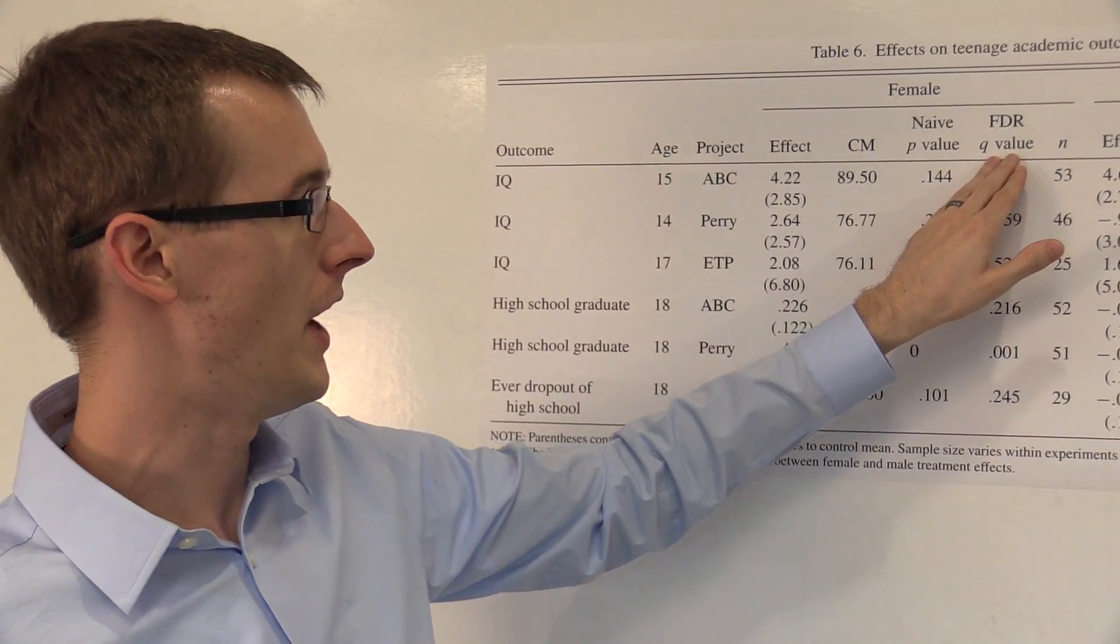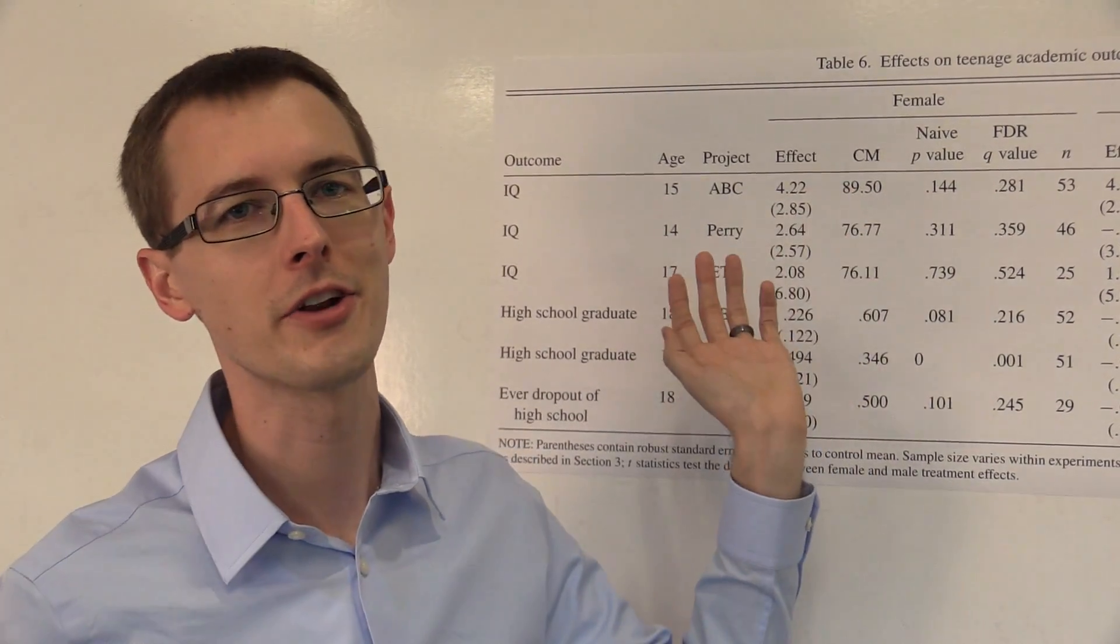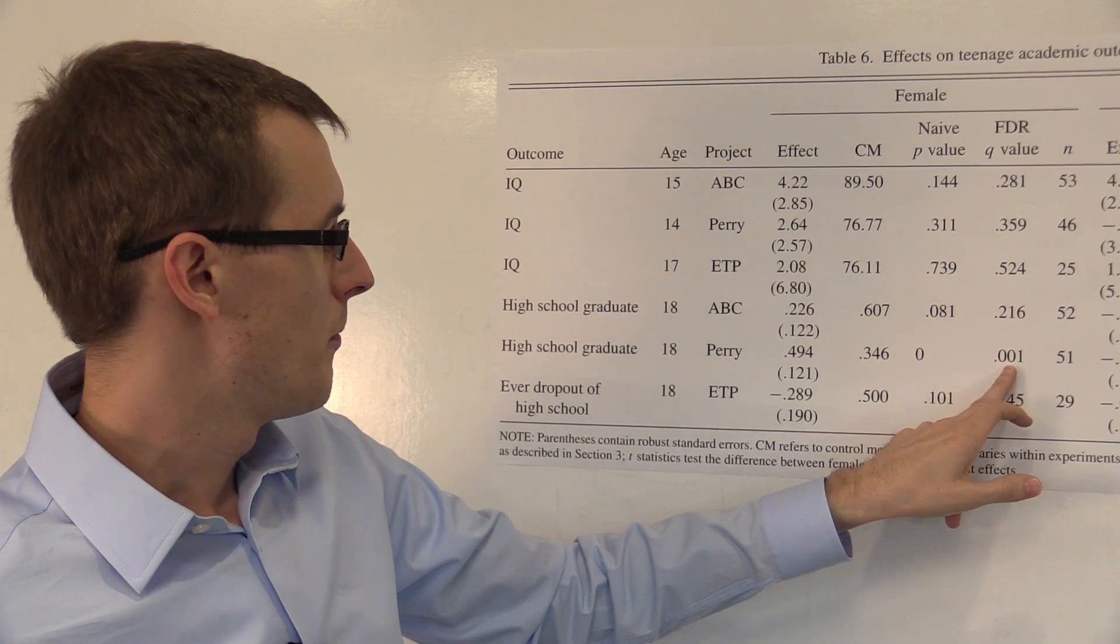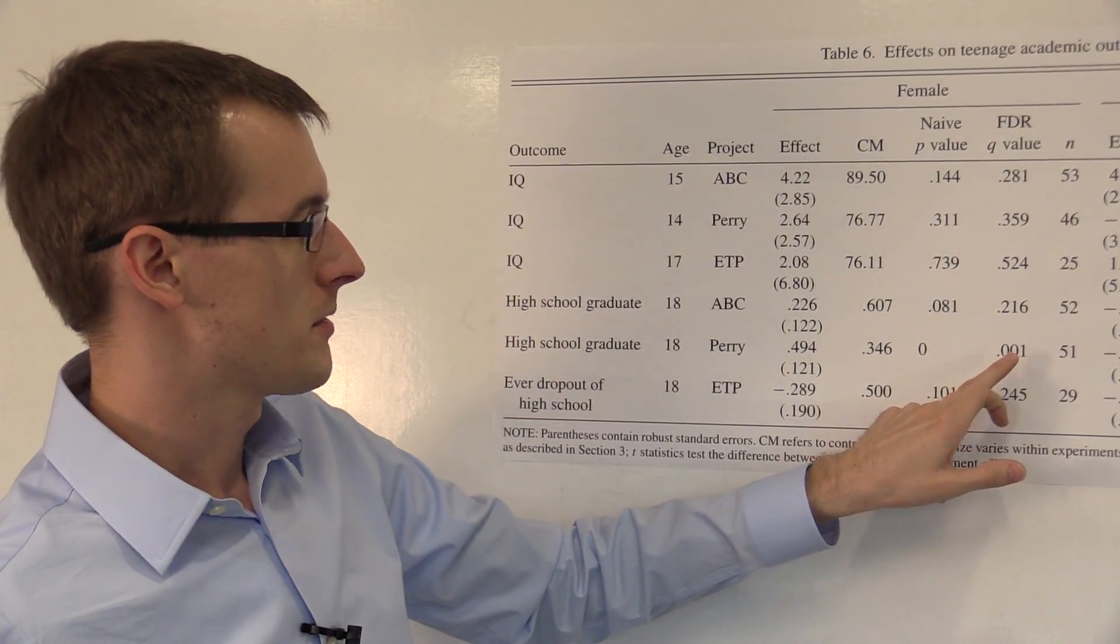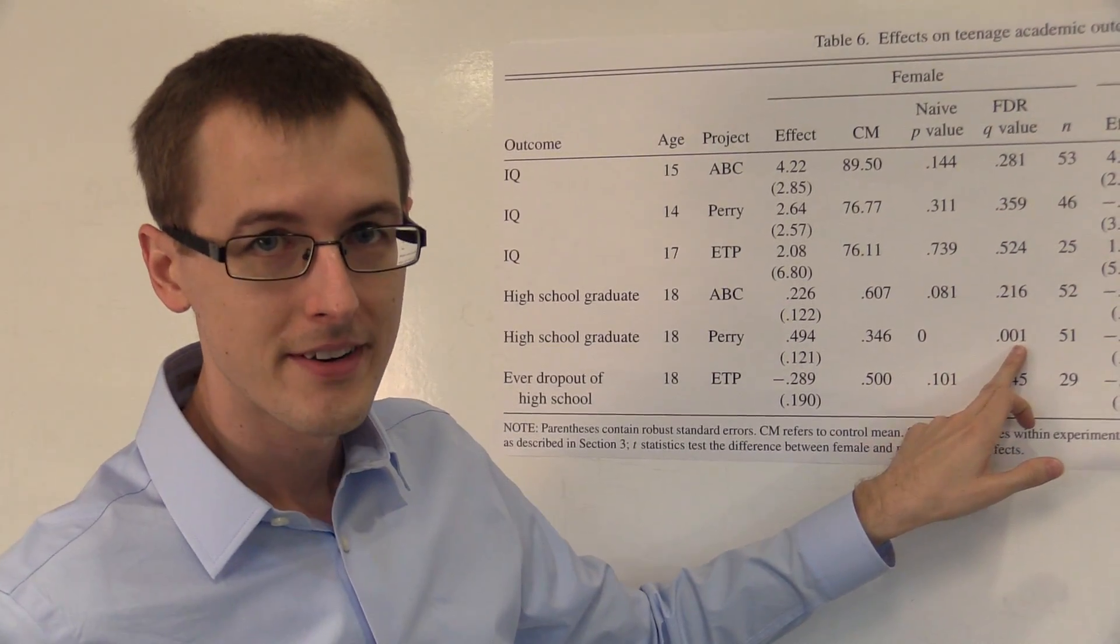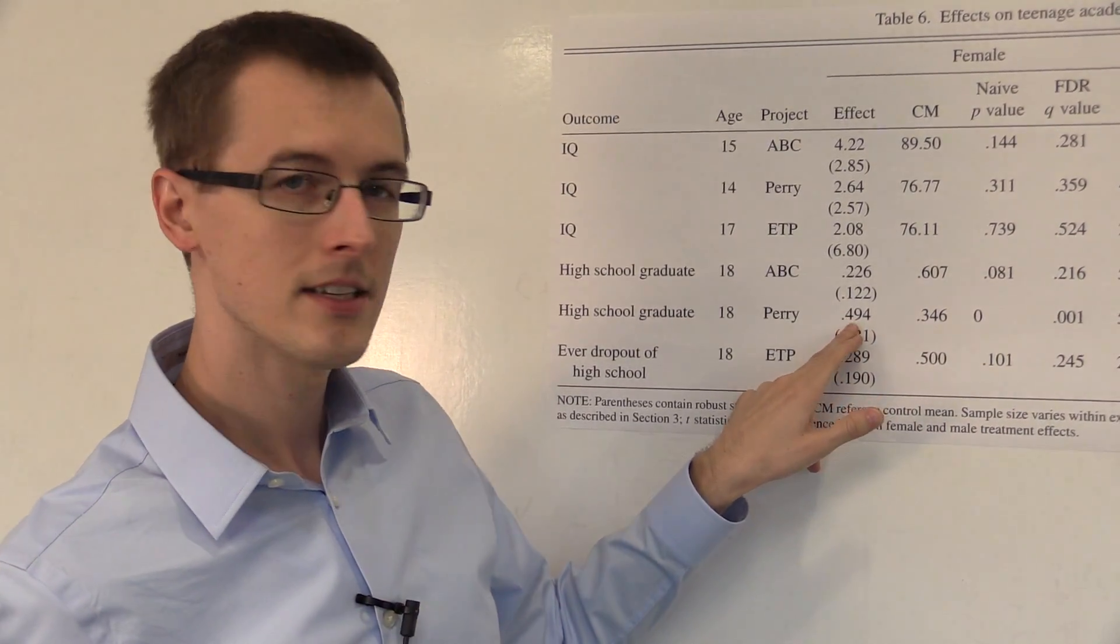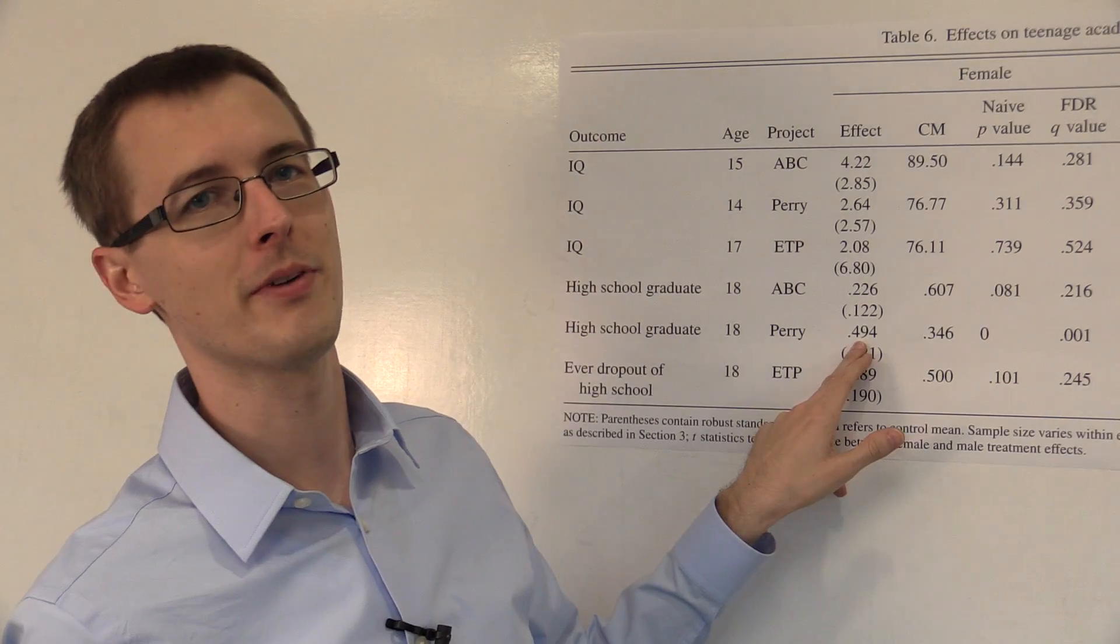It's called the FDRq value, just some technical name for the p-value. Here is the p-value for females: .001. Definitely less than .05. So we can conclude that this is a true treatment effect.